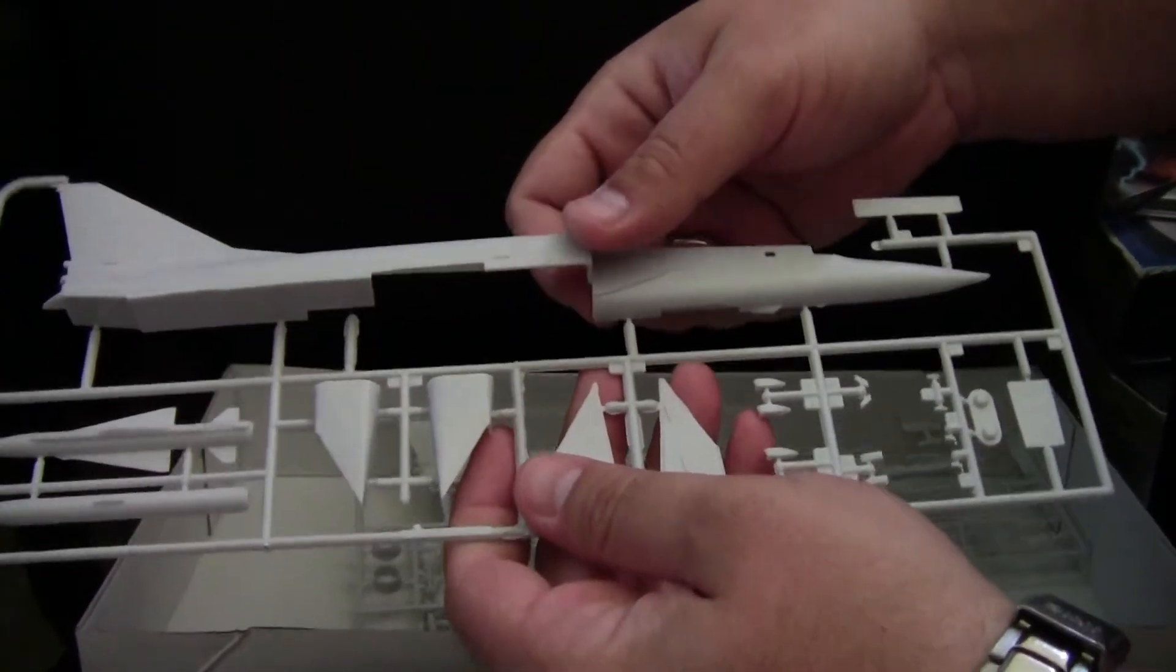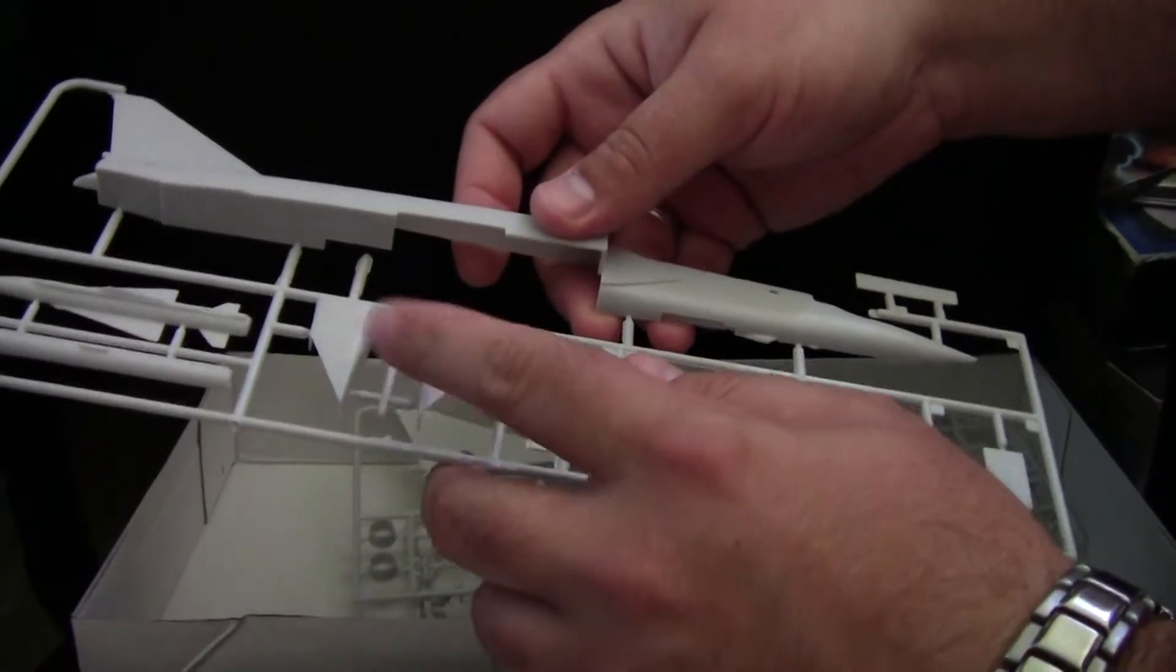On this sprue we've got part of the fuselage halves, as well as one set of intakes.